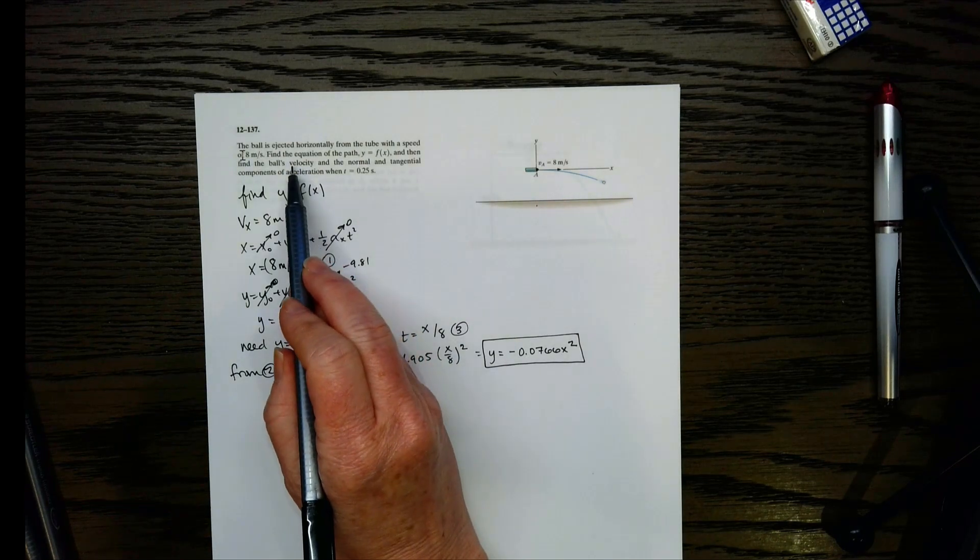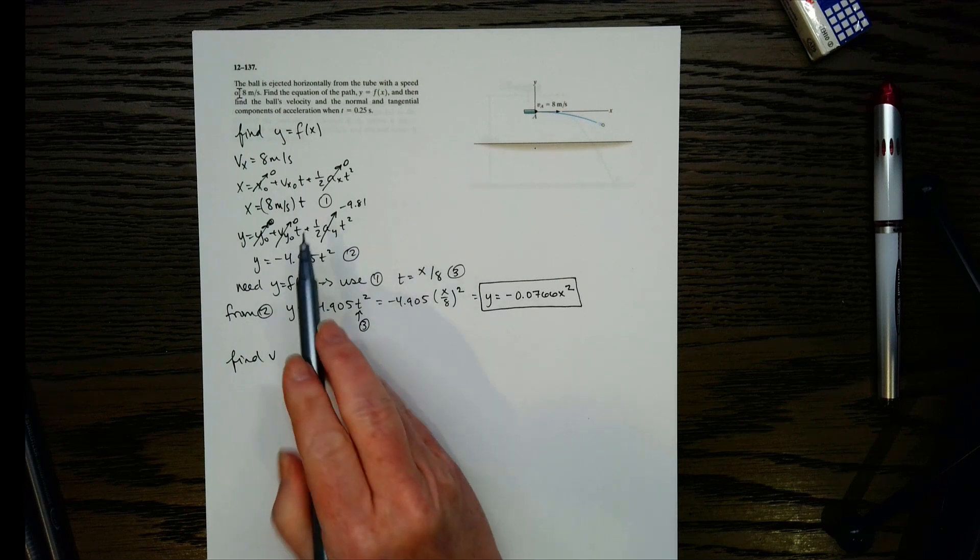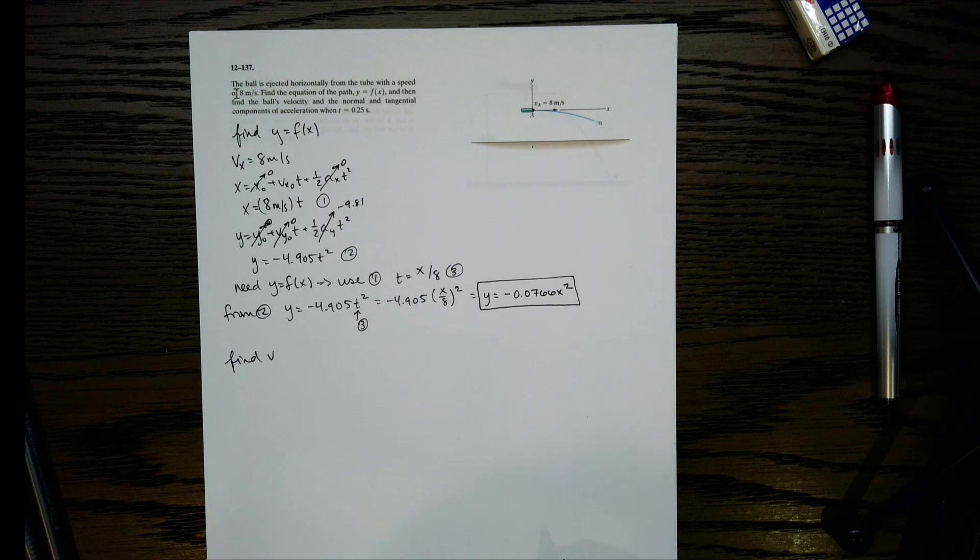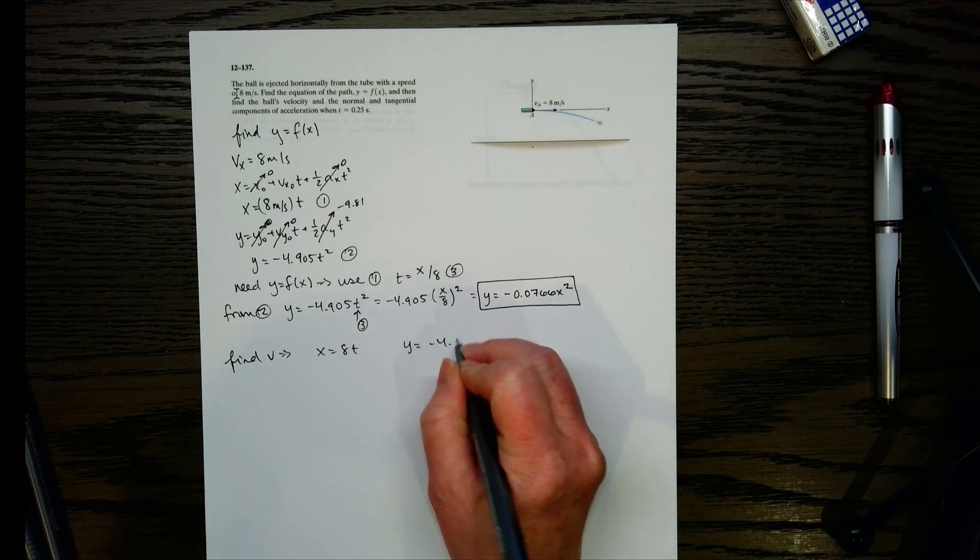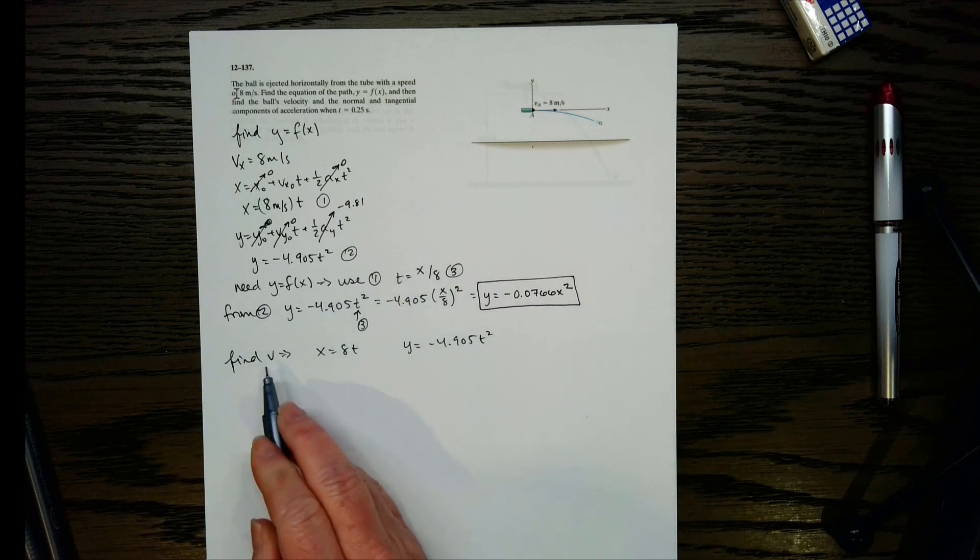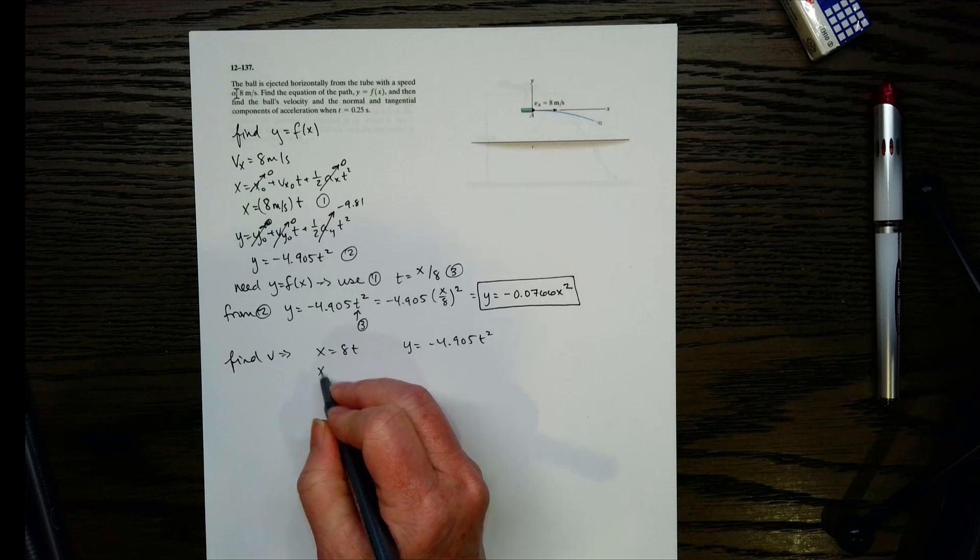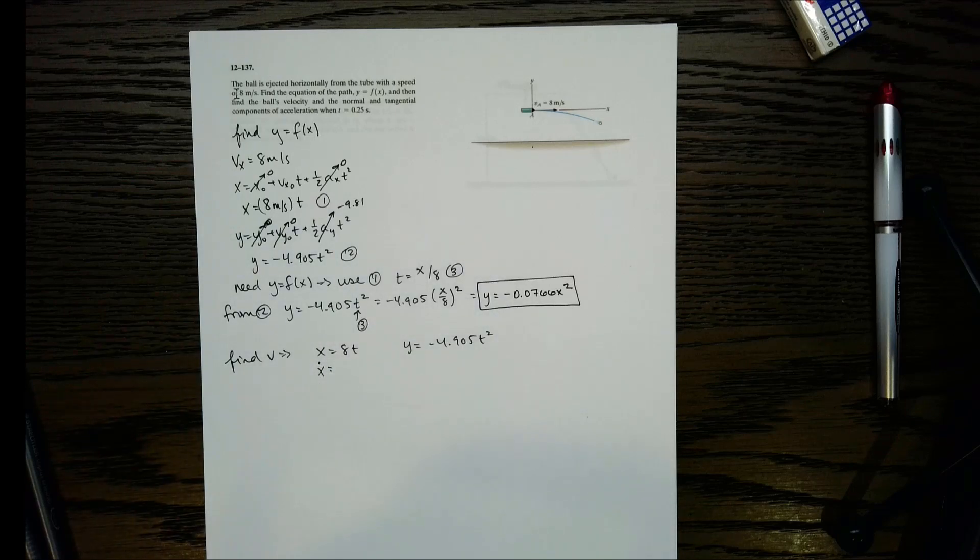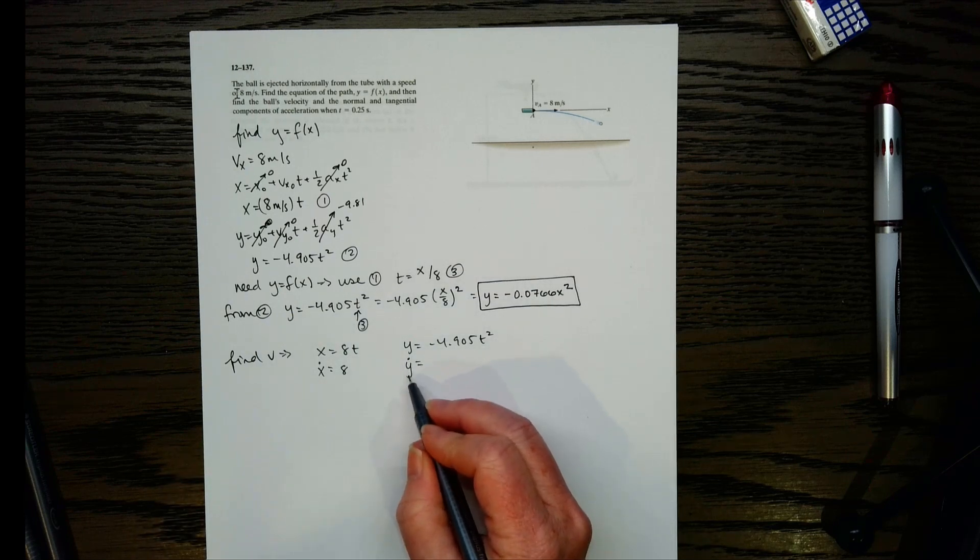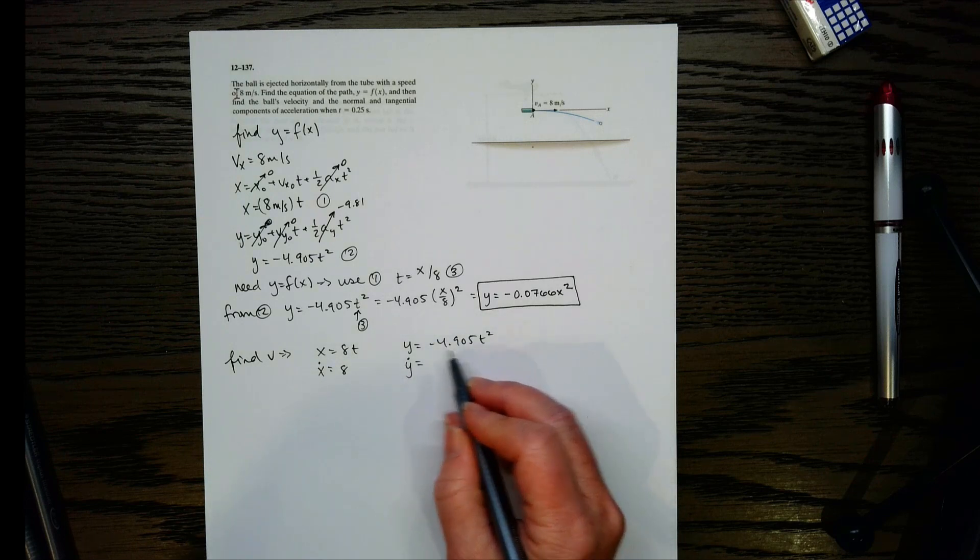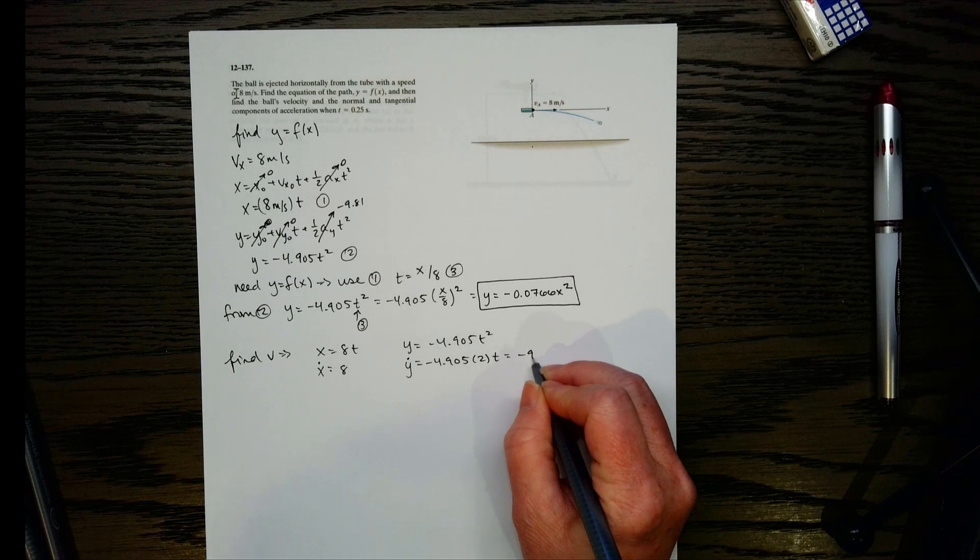Next thing we need to find is the ball's velocity. Let's do that next. So we want to find v. Now I've got these expressions here that we found. So let's go ahead and use those. So x was 8 times t. And then y was negative 4.905 t squared. Now how can I get v if I've got basically position equations? What about taking the derivative? So let's take the time derivative here. So x dot, remember the dot means first derivative with respect to time. So x dot is going to be 8. Do the same thing with y. y dot or first derivative of y with respect to t would be negative 4.905 times 2 times t. So that is negative 9.81 t.